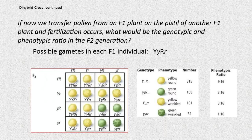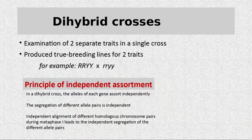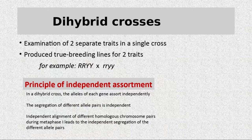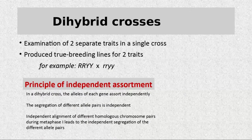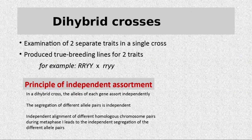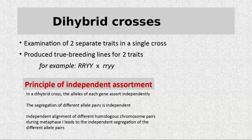The Punnett square is very important because it explains the principle of independent assortment. This happens during meiosis, especially when cells separate during anaphase — they get separated independently. The segregation of different allele pairs is independent. The independent alignment of different homologous chromosome pairs during metaphase I leads to the independent separation of different allele pairs.